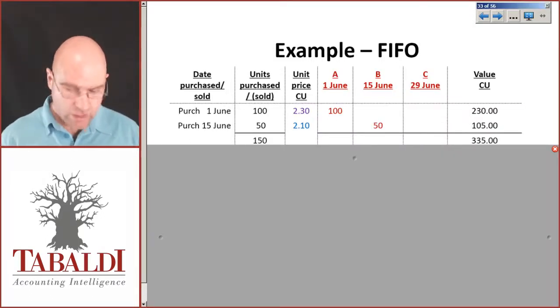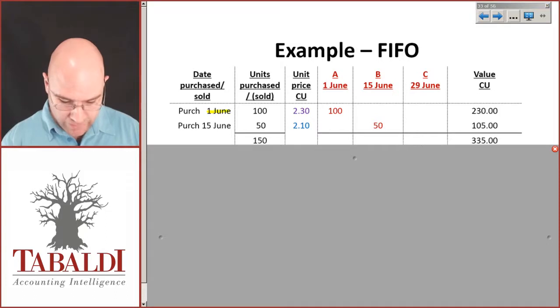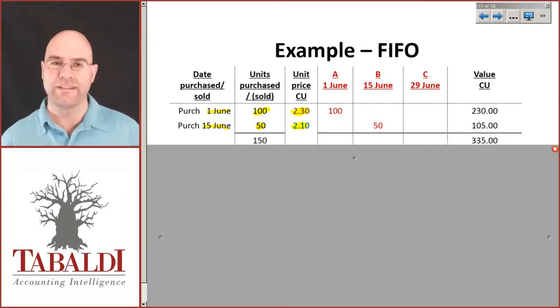Let's have a look. So we're going to base an example on the same figures we use for the weighted average. We have a purchase on the 1st of June for 100 units at 2.3 currency units, another one on the 15th of June for 50 units at 2.10. Now what you'll see is I'm just keeping a column here for each purchase that we go through.